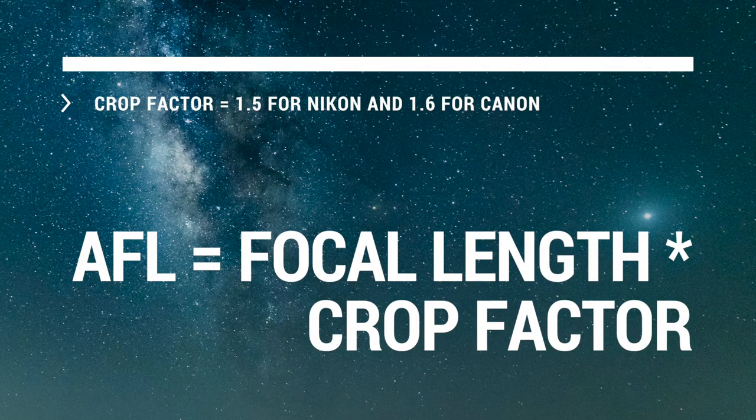Before I go into the calculations, let me clarify what 'actual focal length' means. If you're using a full-frame camera, it's just your focal length. But if you're using a crop-sensor camera, your actual focal length is the focal length you're shooting at multiplied by the crop factor. So make sure you're calculating that correctly. Then 500 divided by the focal length gives you the maximum shutter speed. For example, if your actual focal length is 50mm, then 500 ÷ 50 = 10 seconds.